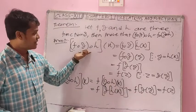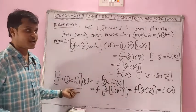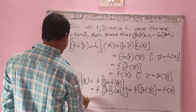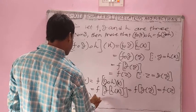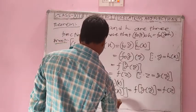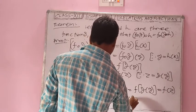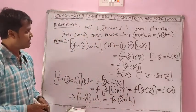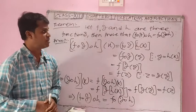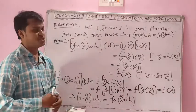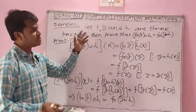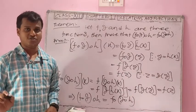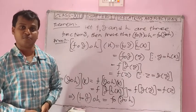Now you can see the left-hand side value equals the right-hand side value. So (f∘g)∘h equals f∘(g∘h). Therefore the composition of functions satisfies the associative property.